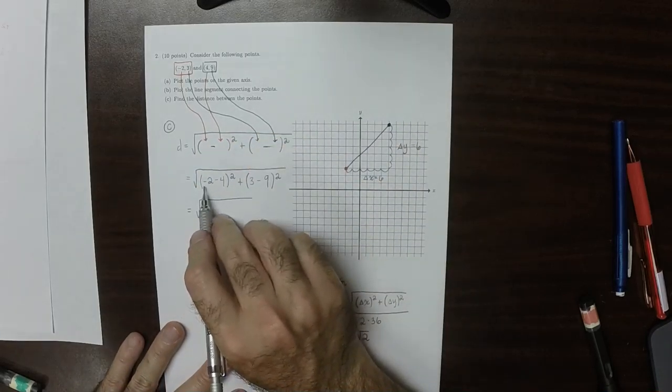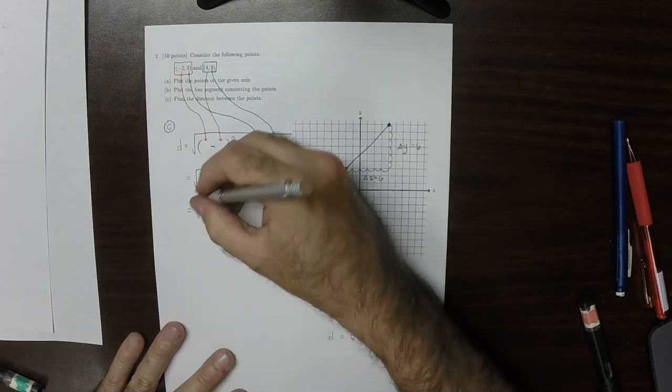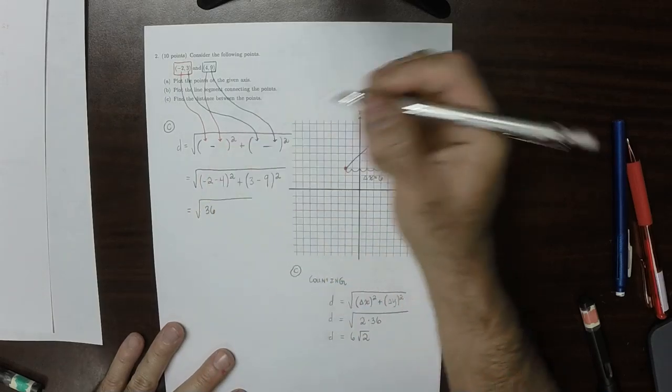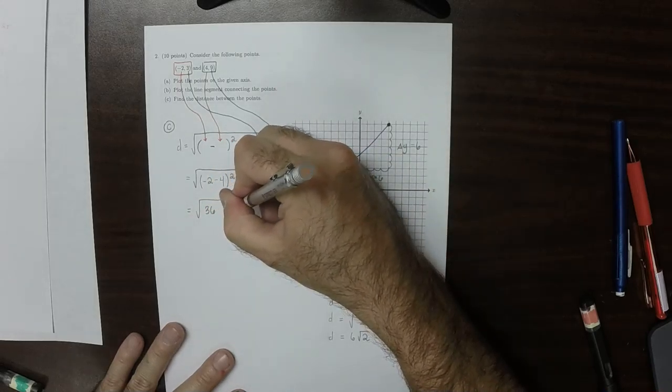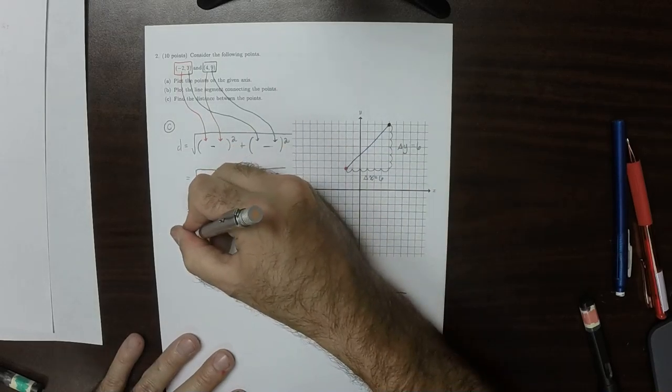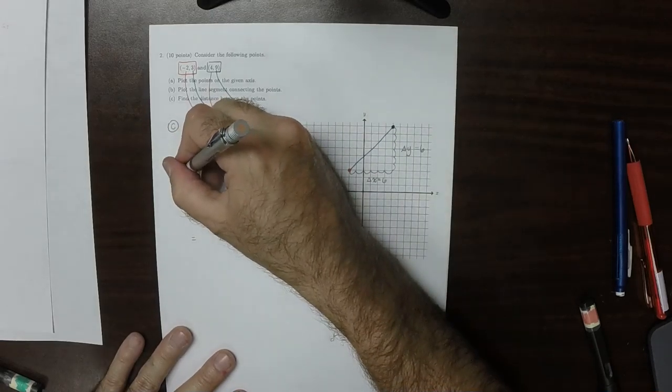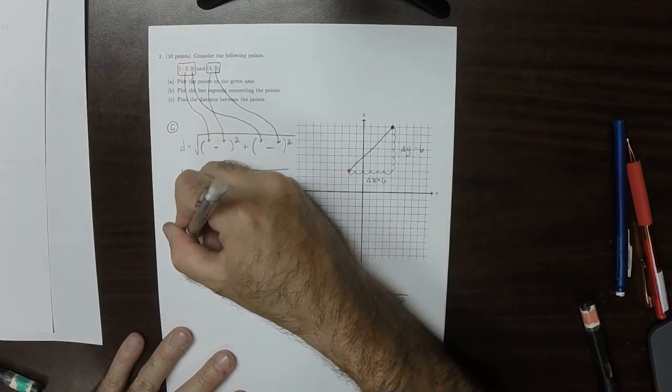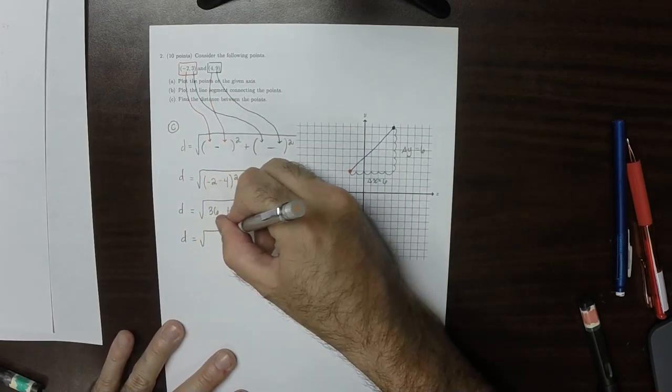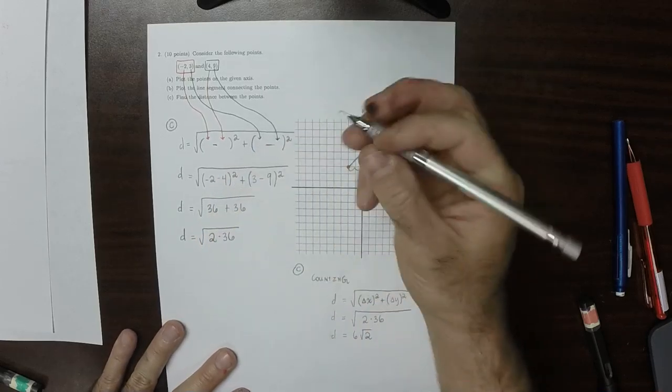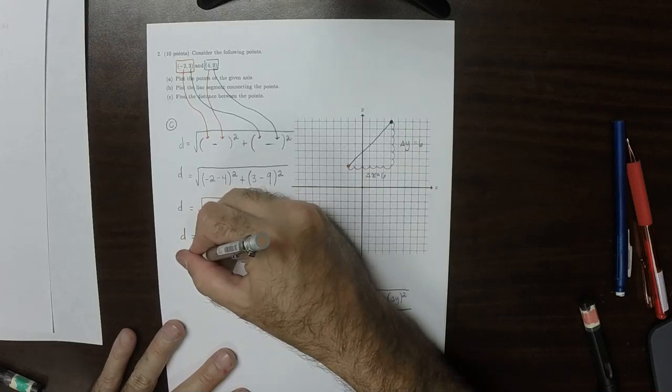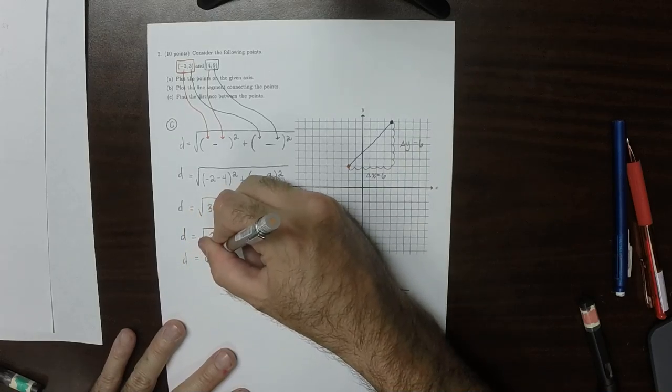Well, that would be negative 6. And then square that, that would be 36. That would be negative 6. Square that. And that would be 36. So 2 times 36 is under the radical. So the distance would be 6 square root 2.